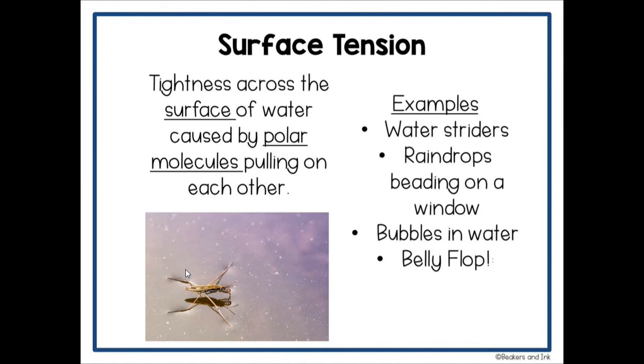Surface tension is what causes raindrops to bead on a windshield. If you sprinkle pepper in your soup, the pepper doesn't float on top of the soup, but it's actually the surface tension that keeps the pepper sitting on that top skin because the polar molecules are pulling on each other. So let's take a look at some examples here. Water strider, like we just looked at in the picture, raindrops beading on a window, bubbles in water are another example of surface tension. And I'm sure everyone has done a belly flop at one time or another. It really hurts. That's because when your body hits the water, that tightness across the surface of the water caused by those polar molecules is what hits and smacks and causes that belly flop to really hurt.